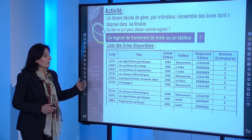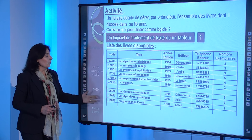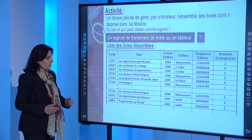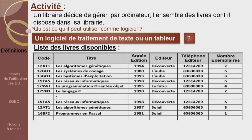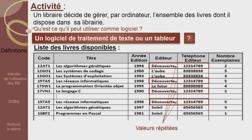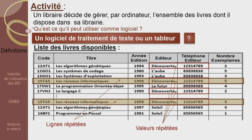Il va pouvoir ajouter autant de livres qu'il veut, trier, chercher pour modifier ou supprimer. Mais toute cette souplesse peut cacher des problèmes : en ajoutant un livre pour un éditeur dont on a déjà ajouté un livre, il réécrit une fois de plus le nom de l'éditeur et son numéro de téléphone. Ces valeurs répétées augmentent le volume de données, donc la taille du fichier. De plus, aucun contrôle automatique n'est fait sur la présence d'un livre sur la liste avant de l'ajouter.